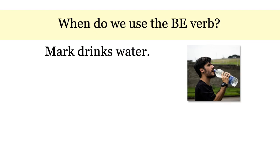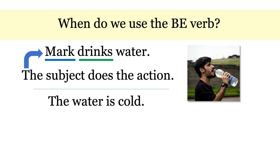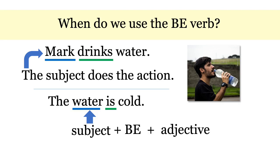When do we use the BE verb? Let's look at this sentence: Mark drinks water. Mark is the subject of the sentence — the subject does the action. Drinks is the action; drinks is the verb. Now let's look at: The water is cold. Water is the subject, and what does water do? Nothing. Water doesn't do anything in this sentence — water just is. This is when we use the BE verb in English. We need a verb but there is no action, so we use the BE verb to connect the subject to the rest of the sentence. IS is the verb, and we use the BE verb to connect to the adjective cold.